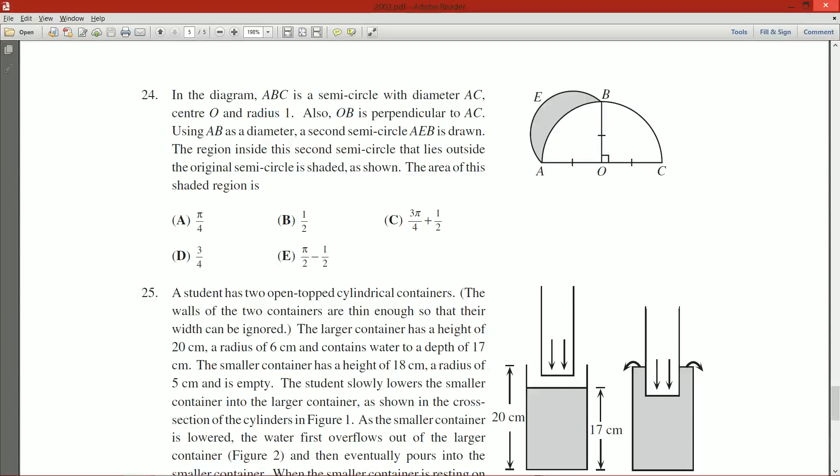Using AB as a diameter, a second semicircle AEB is drawn. The region inside the second semicircle that lies outside the original semicircle is shaded as shown. The area of the shaded region is... we have some answers here, some involving pi, some involving just regular fractions, and some involving both.